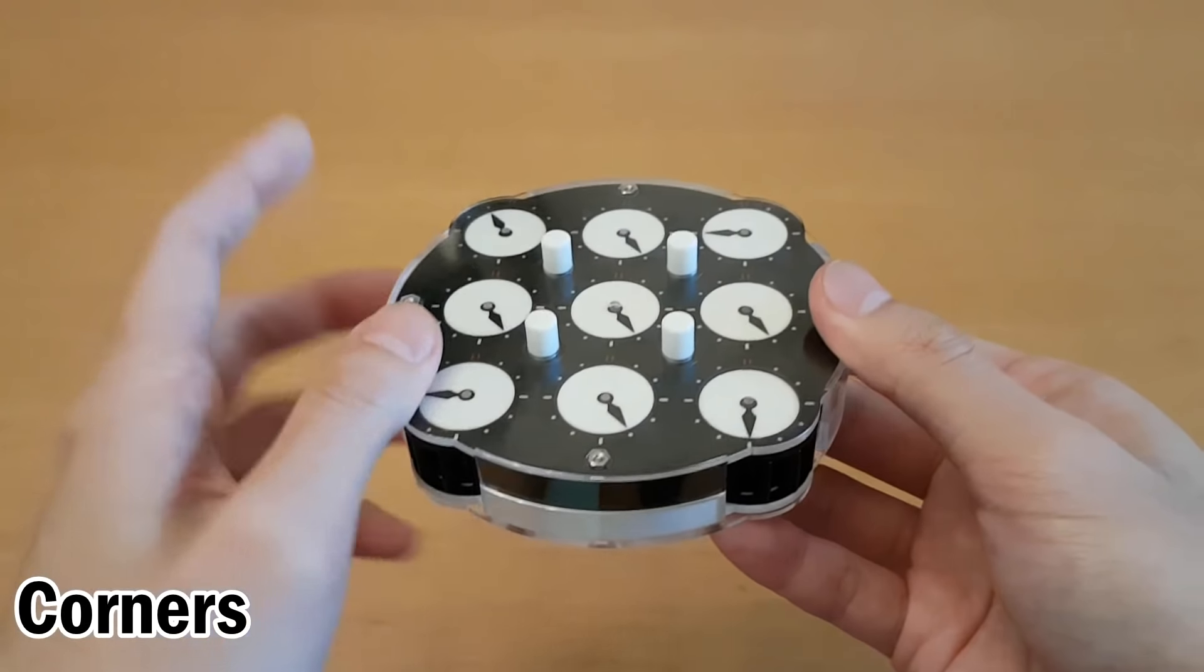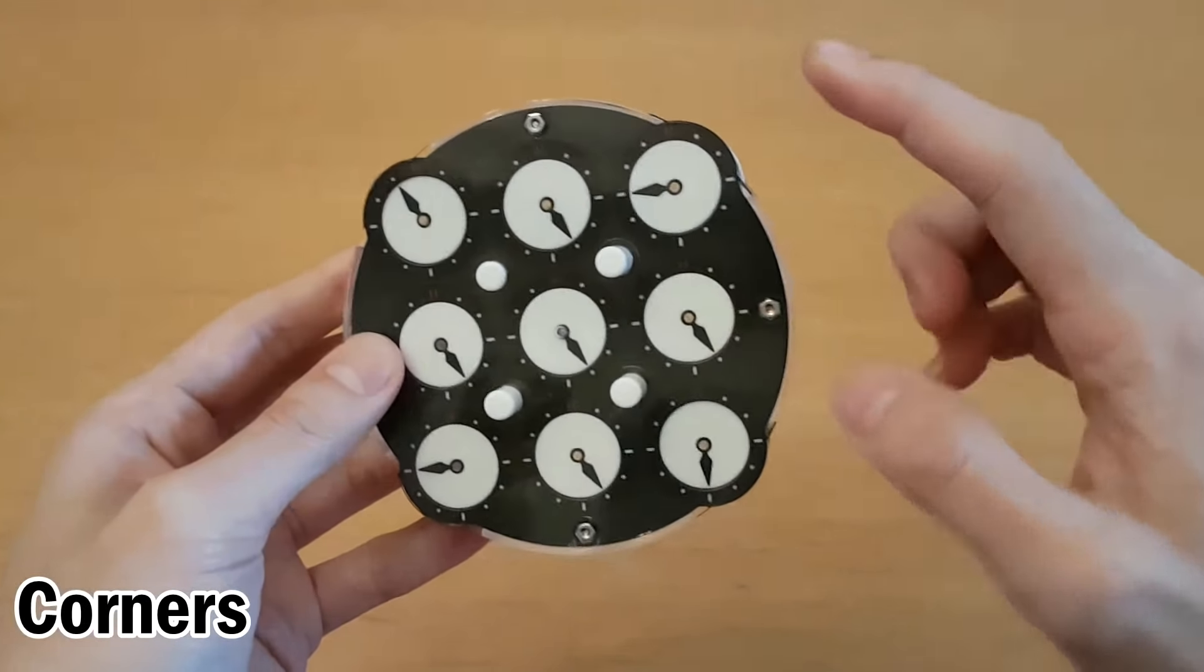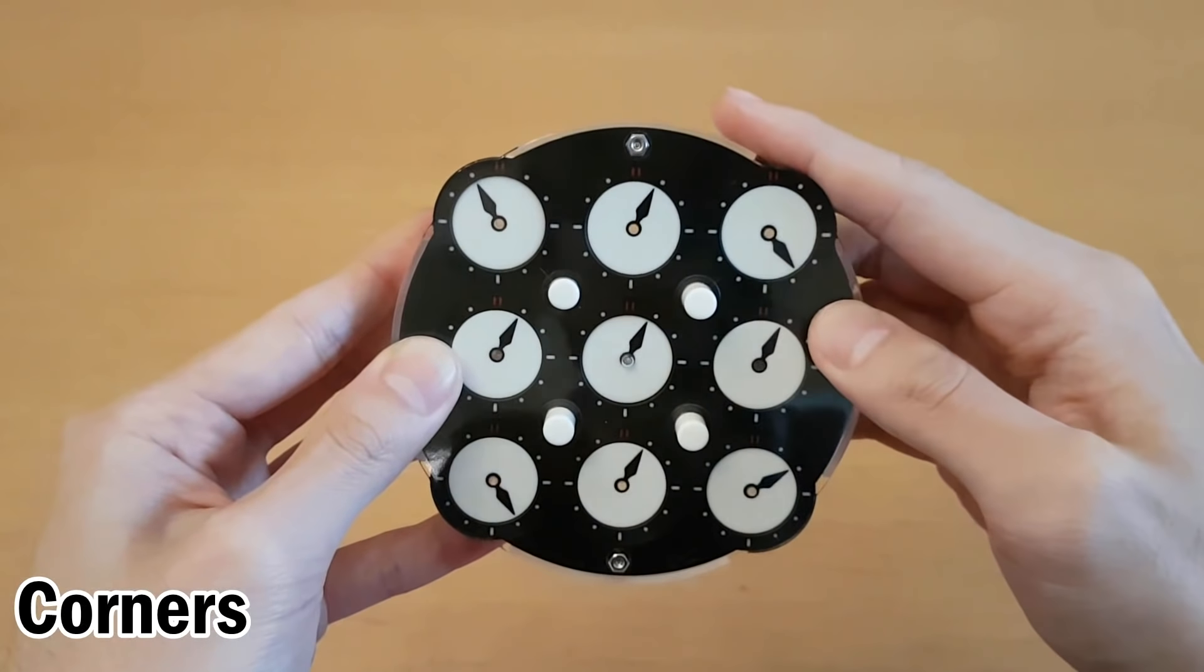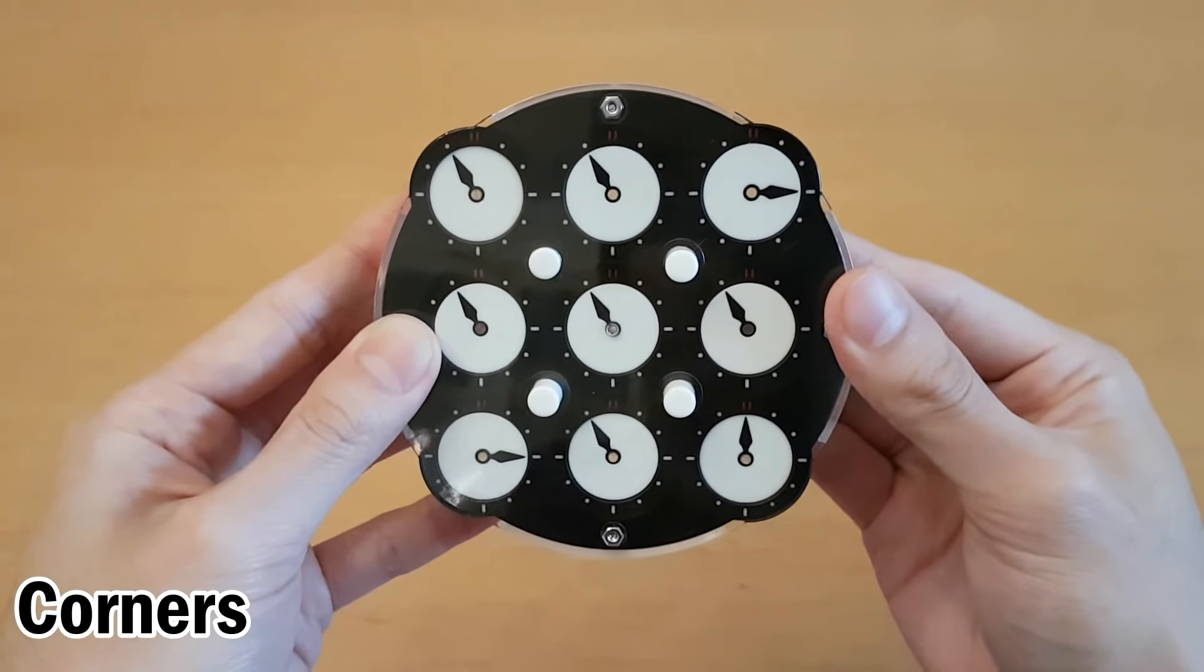How I can do that is put every pin up except for that corner. Now if I turn any of these three dials, it will turn everything except that corner. So I can now match it to that corner.